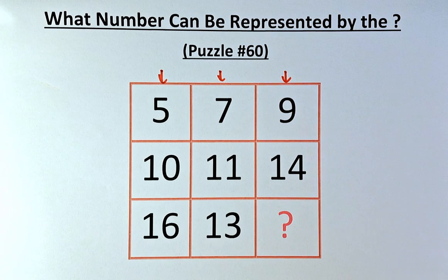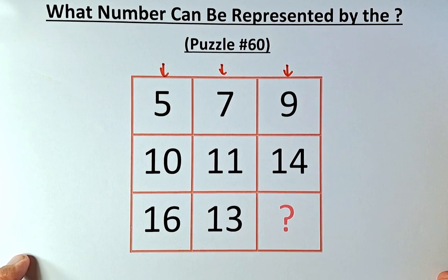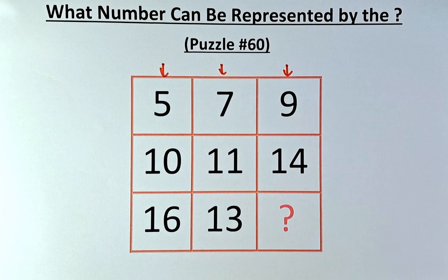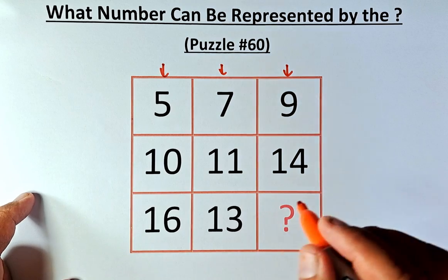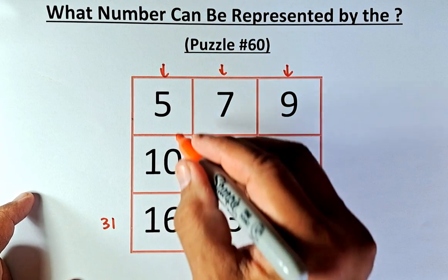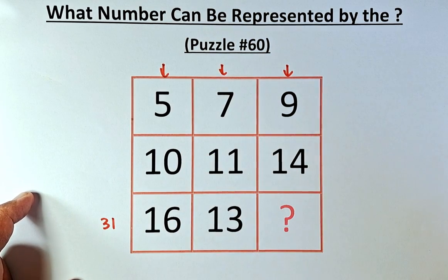So to do that, it's quite simple. If you have a sharp eye, I'm going to bring it up a bit. So 5 plus 10 plus 16, the total is going to be 31. 5 plus 10 is 15, 15 plus 16 is 31.